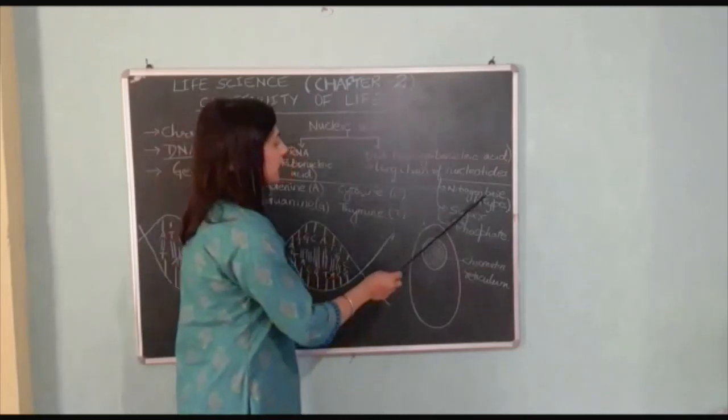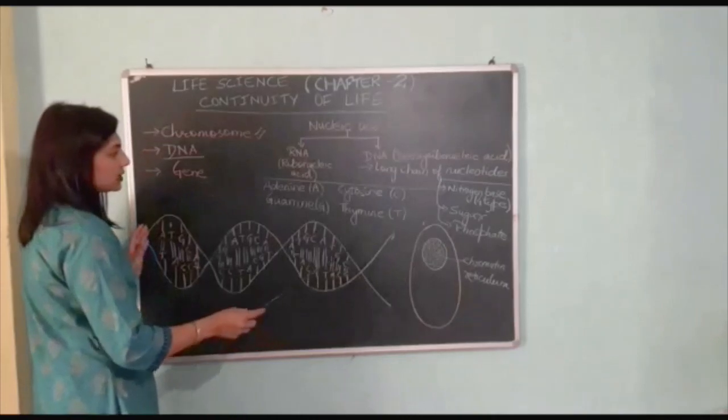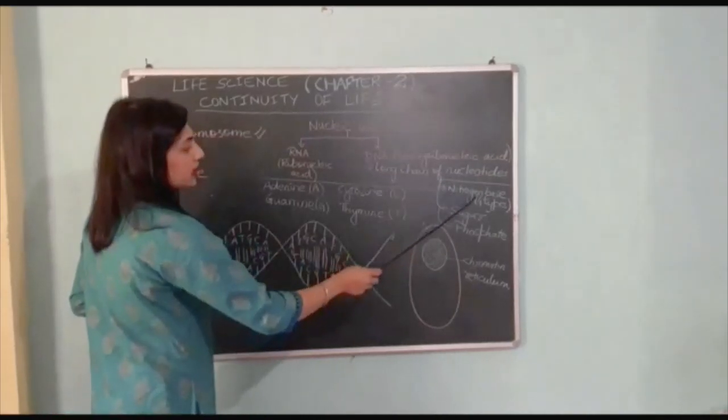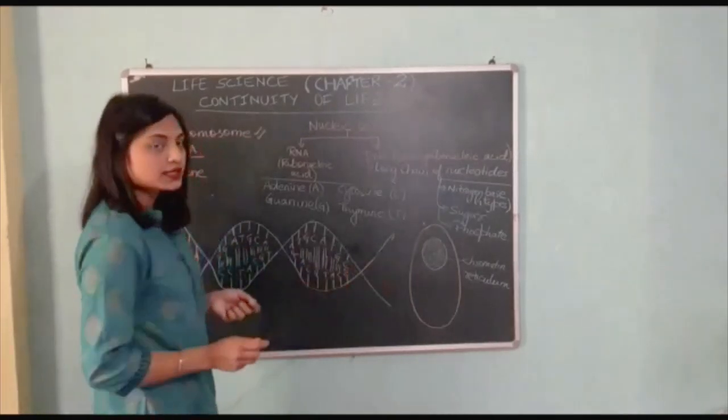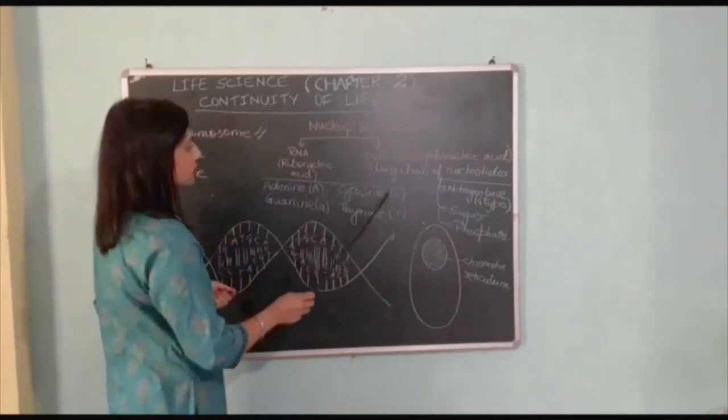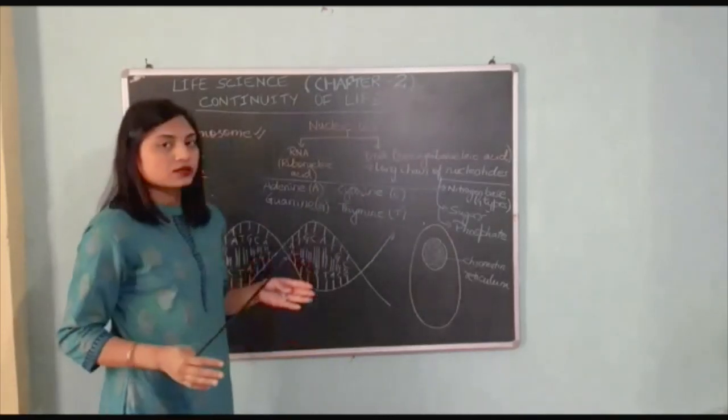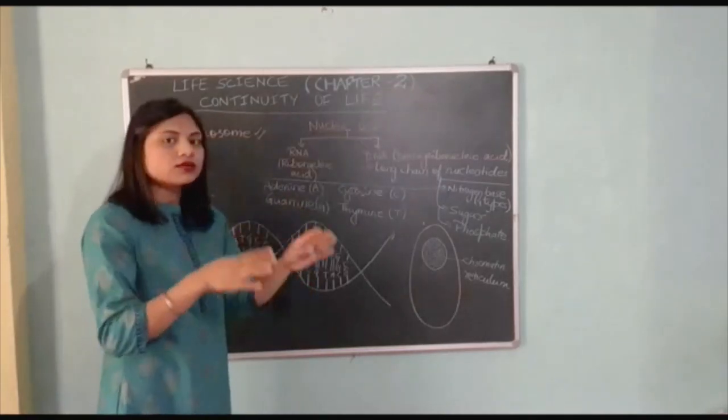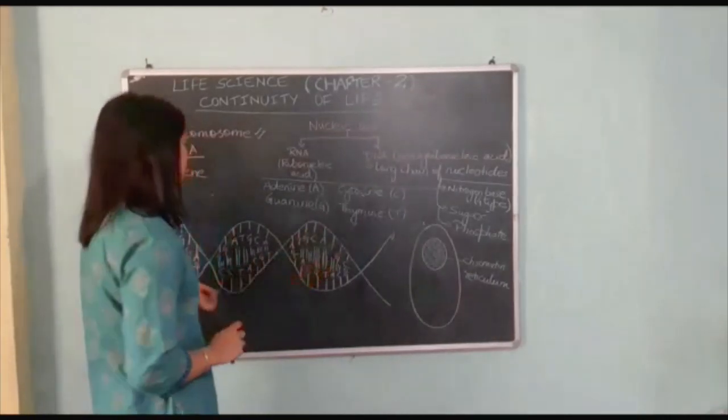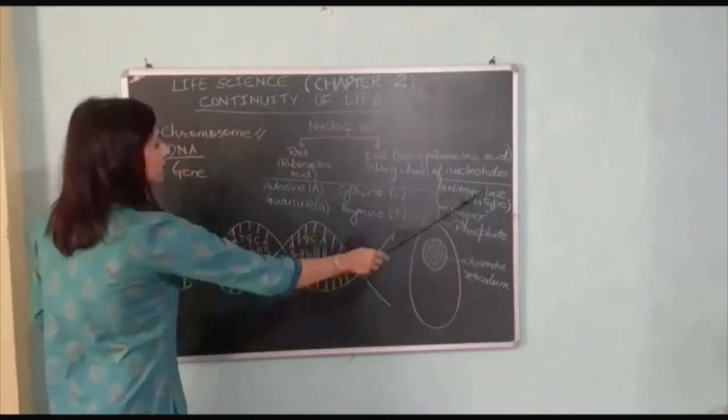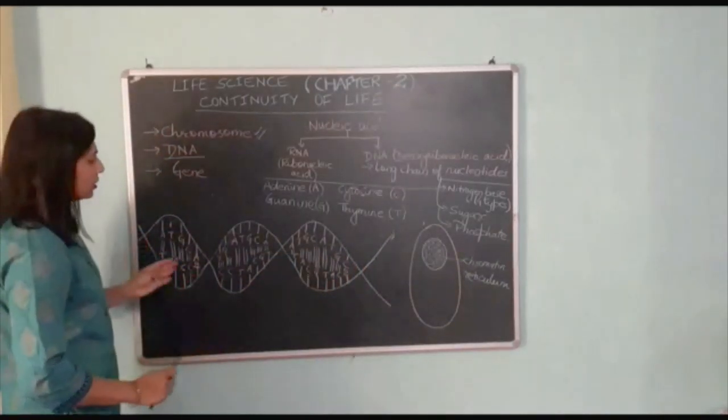I have drawn a small strand of DNA. Here we can see nitrogen base. There are four types of nitrogen bases: adenine, guanine, cytosine, and thymine. These form one DNA strand. These are like a foundation. These four types of nitrogen bases are arranged and through their arrangement a long DNA strand is formed.